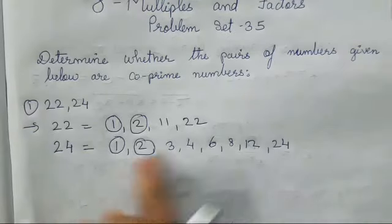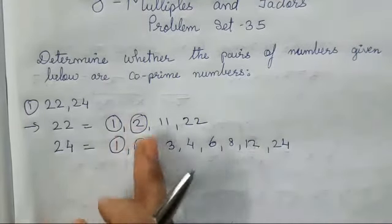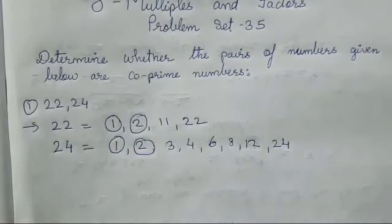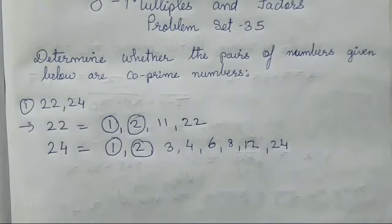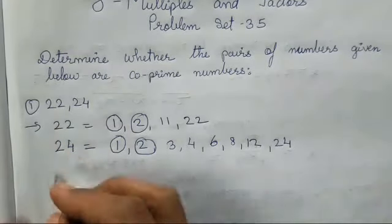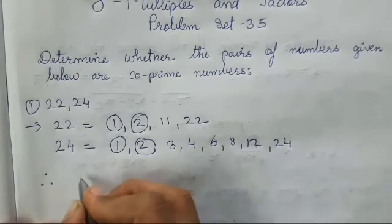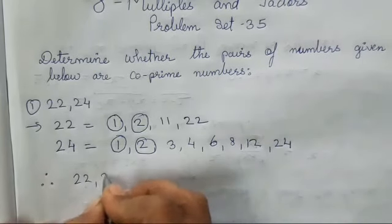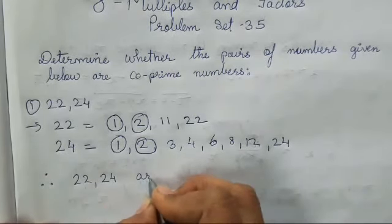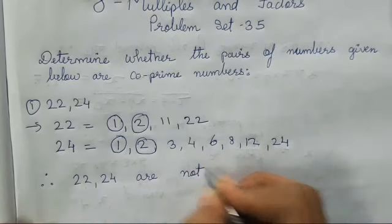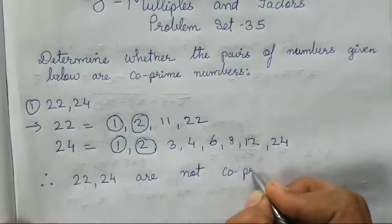Now there are 2 common factors. How many? 1 and 2 are the common factors. 2 common factors are there, meaning these numbers are not co-prime. So therefore,